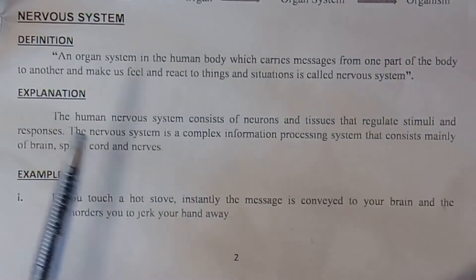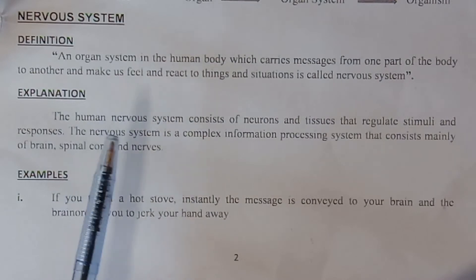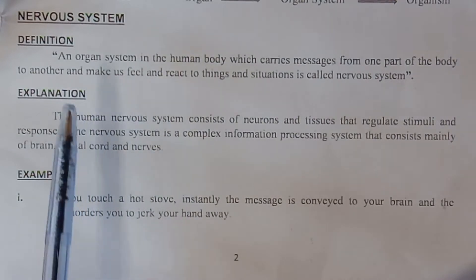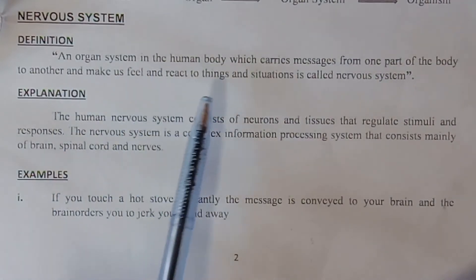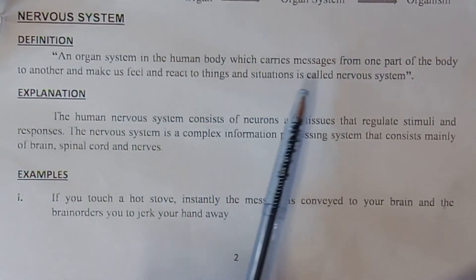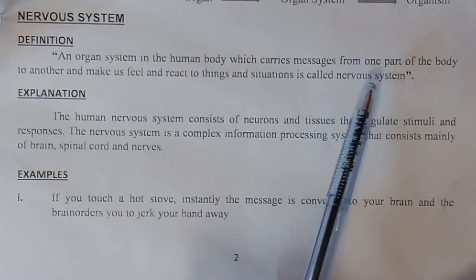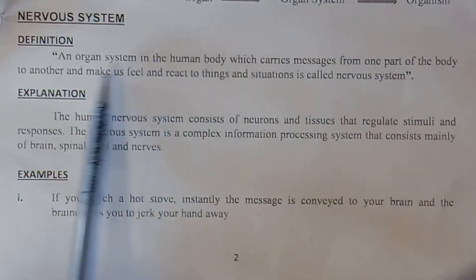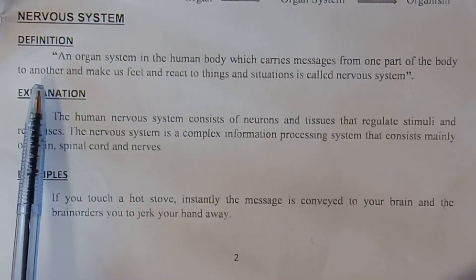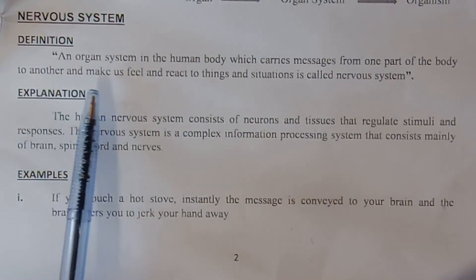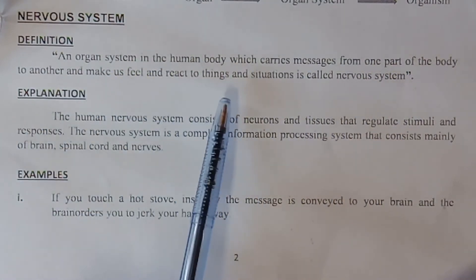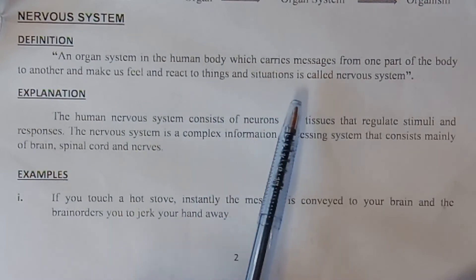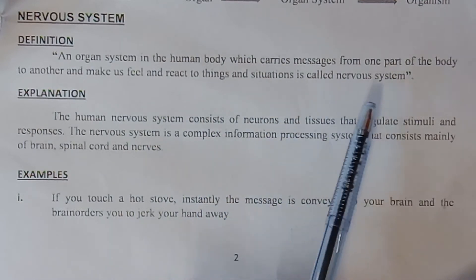In the second part of lecture one, I will explain the nervous system. The nervous system is the organ system in the human body which carries messages from one part of the body to another, and makes you feel and react to things and situations.